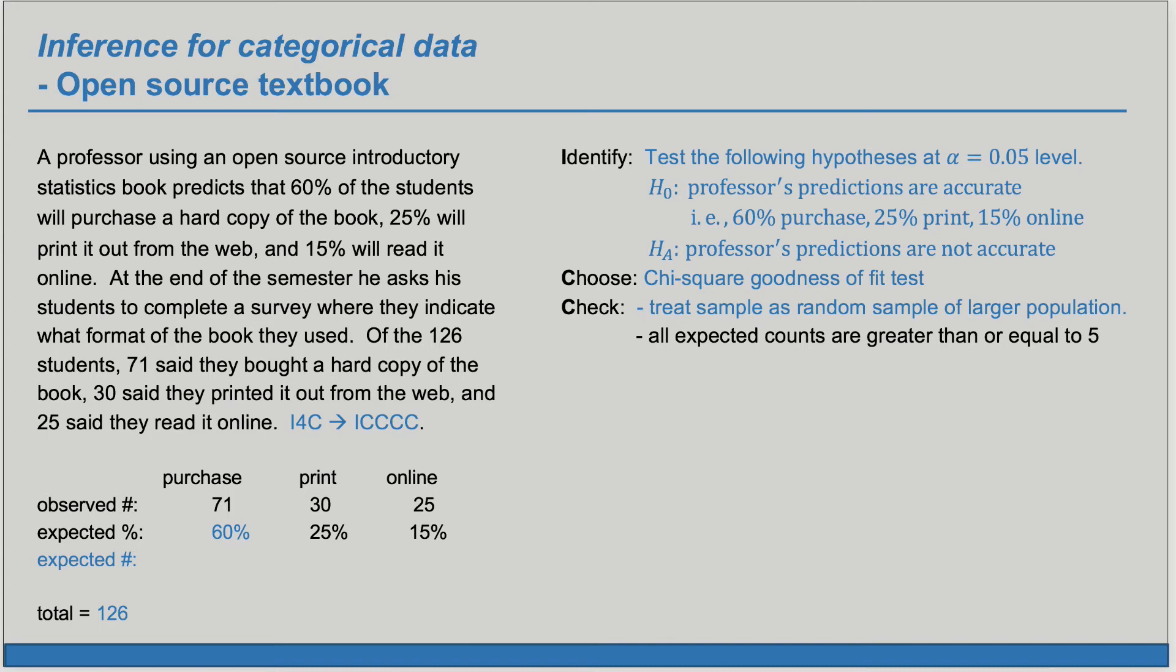Since we expected 60% to be in the purchase group, we'll take 60% of the 126 to see how many we would have expected to be in the purchase group. And that'll give us 75.6. Expected numbers don't have to be integers. Observed numbers are integers but expected numbers like averages don't need to be integers. To find the expected number for print we'll take 25% of the 126 and that gives us 31.5. For the online we'll take 15% of the 126 and that gives us 18.9. These are expected numbers or expected counts and those are all greater than or equal to 5. So that condition is met.